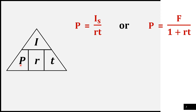If we are solving for the value of the principal, all we have to do is divide the interest by the product of the rate and time. Therefore, we have P equals IS divided by rate times time. Or, the principal is equal to the future value divided by 1 plus rate times time.